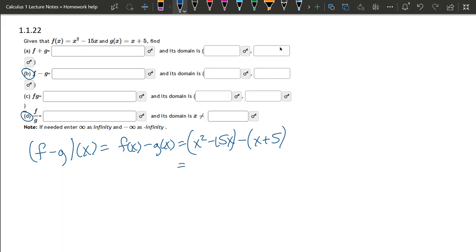Now we're going to distribute that negative sign on the g of x part. So it's negative x minus 5. So we got x squared minus 16x minus 5. And that's the answer to part b here.